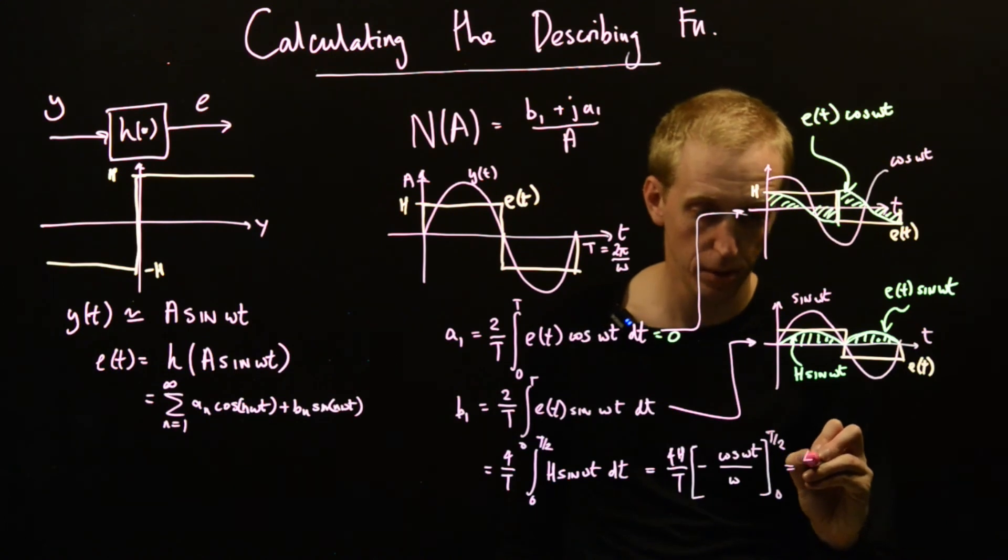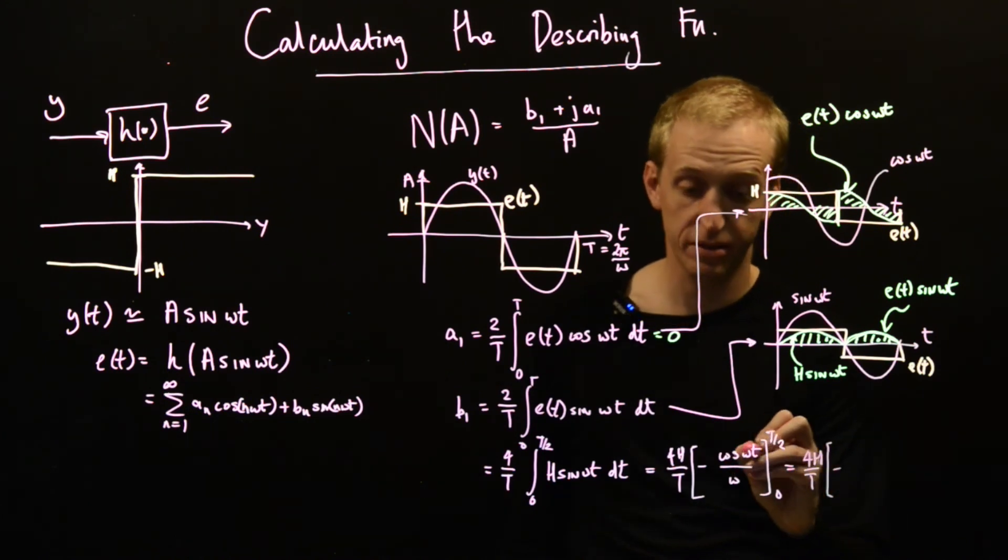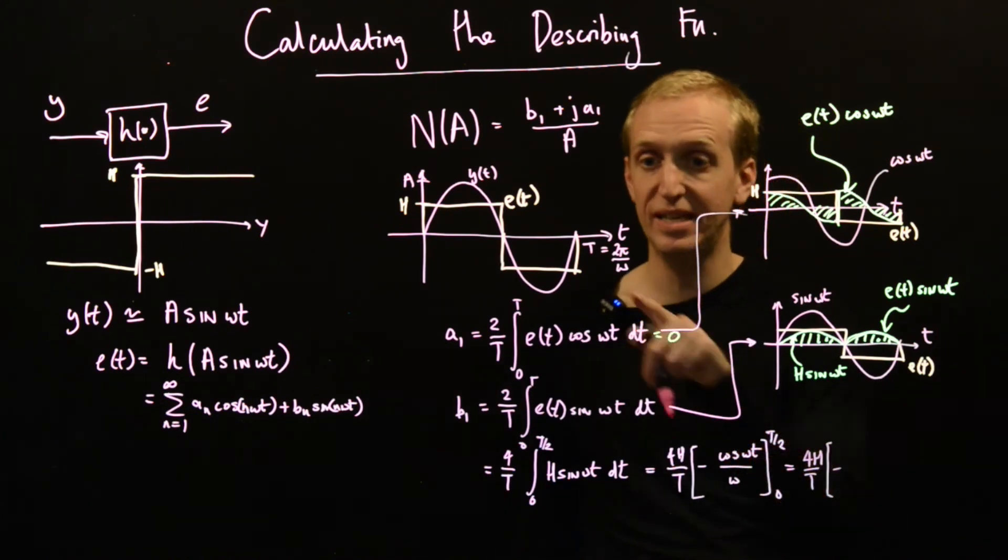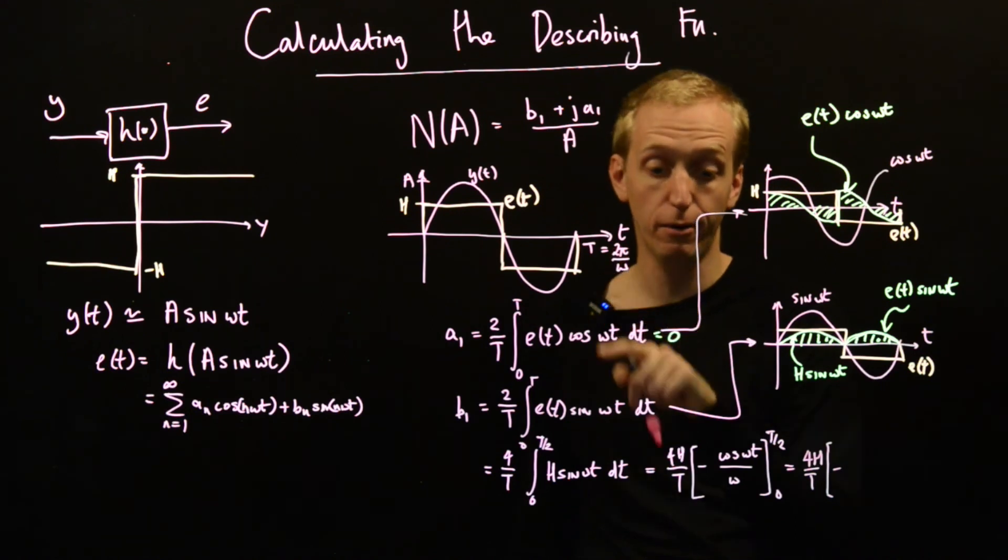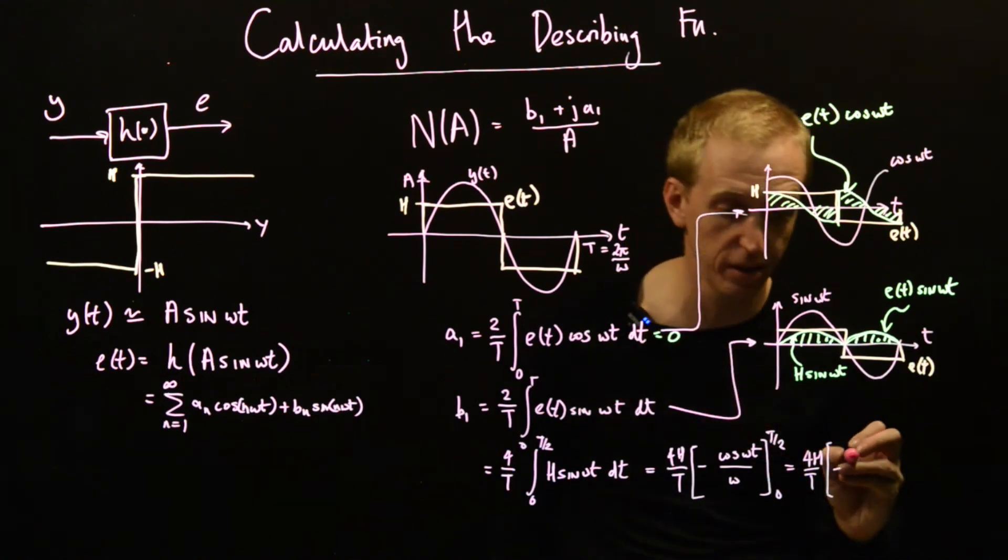So what's this equal to? Well, this is equal to 4h over T. And now we have minus cos(ωt), but T is equal to 2π over ω. So what do we get? So T over 2 is just π over ω. So we have minus cos(ω times π over ω). So that's just cos(π).